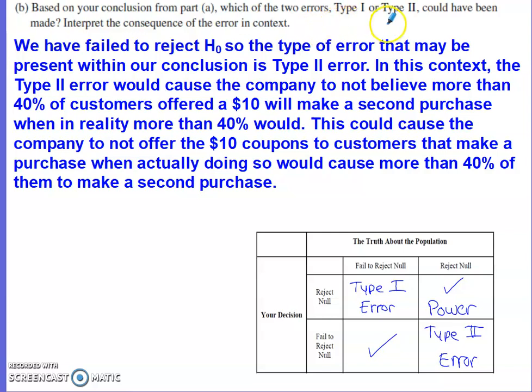Part B asks: based on the conclusion we just made, which of the two errors, Type I or Type II, could have been made? Interpret the consequence within context. There's the truth about the population and the decision we make. If we decide the same as the truth, there's no error. The place where you encounter an error is if we reject the null but shouldn't have, or if we fail to reject the null but should have.